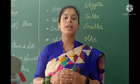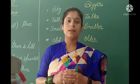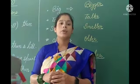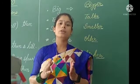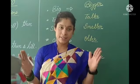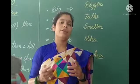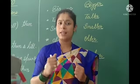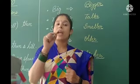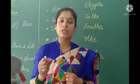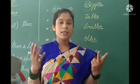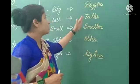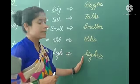For comparison, we use the ER form of describing words — like bigger, smaller, thinner, faster. We add ER. So to make a comparison between two people, animals, or objects, we use the ER form of describing words: bigger, taller, smaller, older, higher — like this.